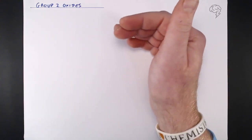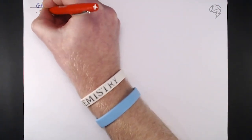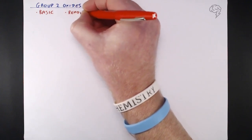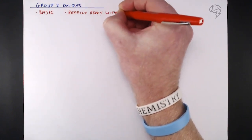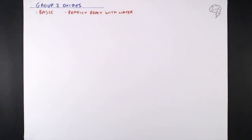Group 2 oxides — what do we know about them with respect to their reaction with water? First up, they're basic. Metal oxides are basic, so when they react with water they produce a hydroxide, and all of them readily react with water. The equations for the reaction between group 2 oxides and water are all exactly the same.